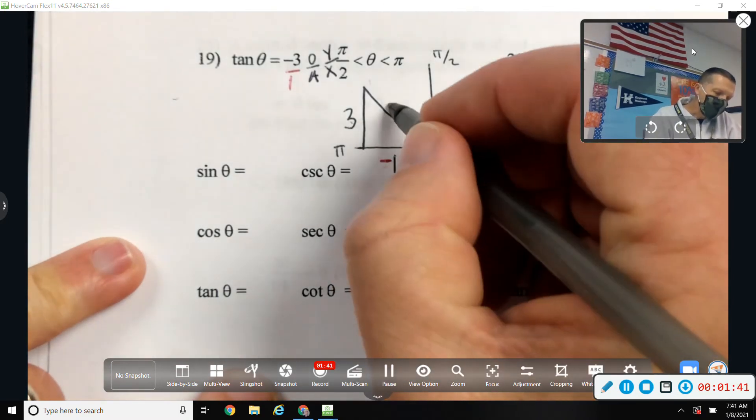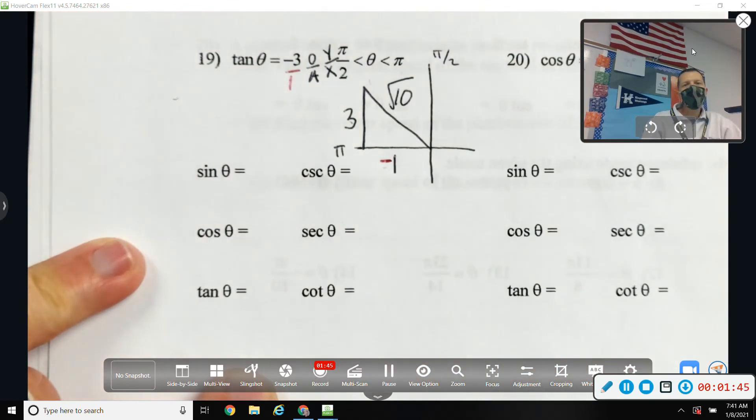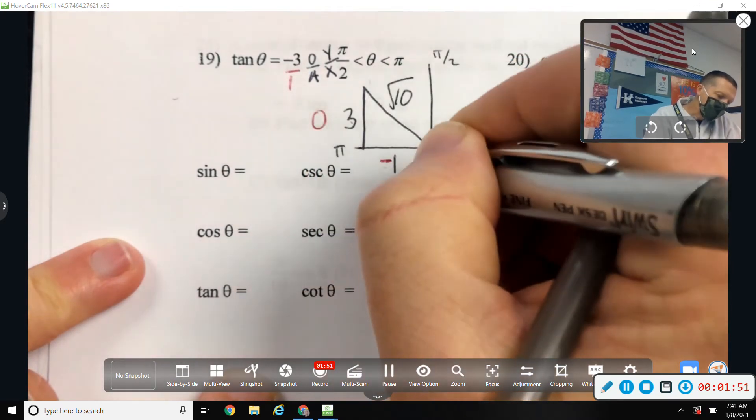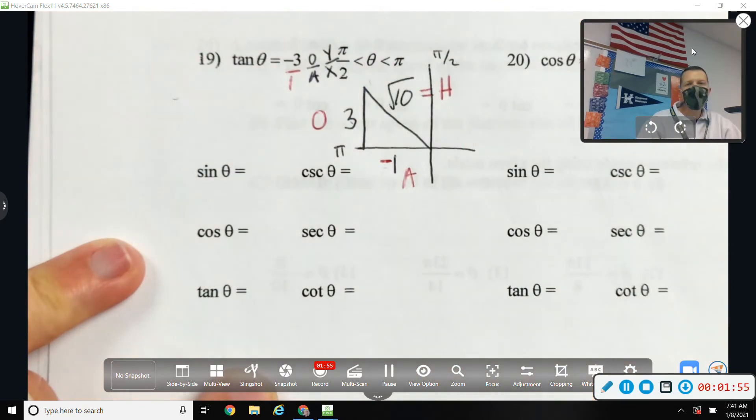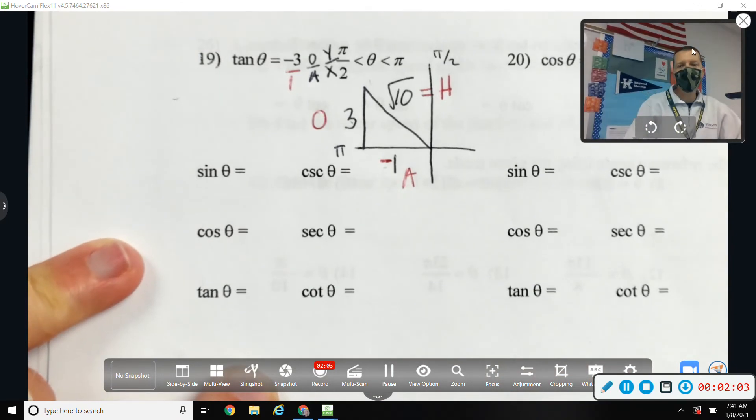A squared plus B squared. 9 plus 1. Square root of 10. We already said the y value is the opposite, the x value is the adjacent. My hypotenuse is easy to spot. So again, I like to label them with O and A and H because now it's just like all the other O, A, H problems. So now it's just the regular old SOH CAH TOA problem.